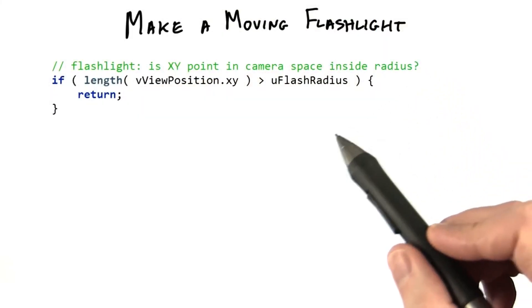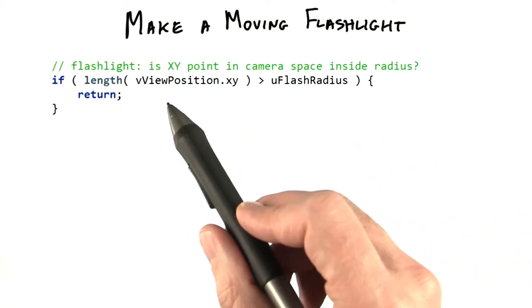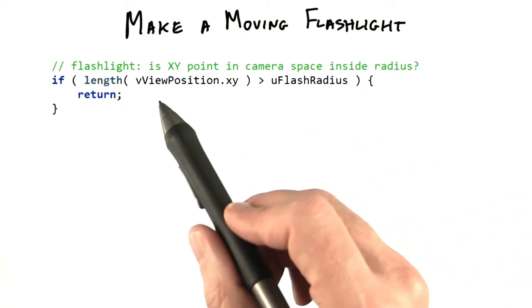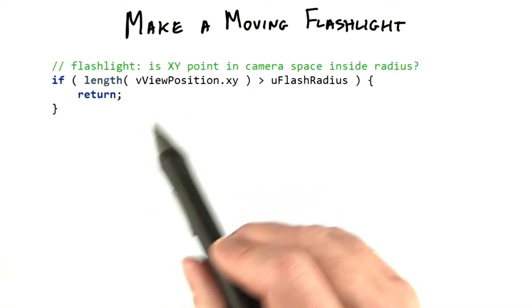This is the only addition I made to the fragment shader. The VViewposition is the location of the surface in viewspace. Actually, this is the position negated, but for our purposes, it doesn't matter too much.